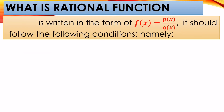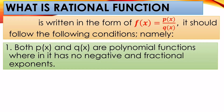So first, what is a rational function? A rational function is written in the form f(x) = p(x) over q(x). It should follow these conditions: first, both p(x) and q(x) are polynomial functions where they have no negative and fractional exponents. We can say it is a rational function as long as the numerator and denominator are always polynomials with no negative and fractional exponents.